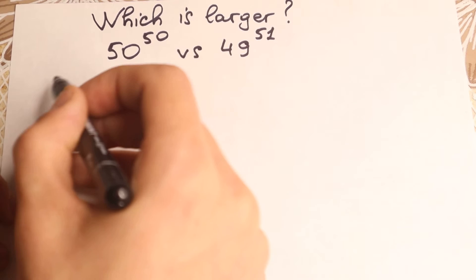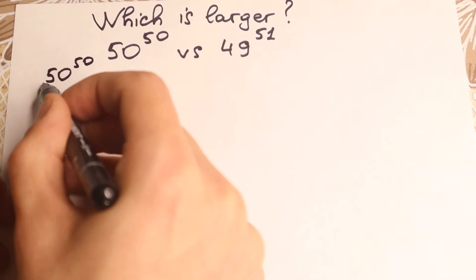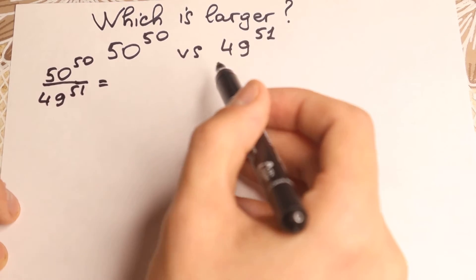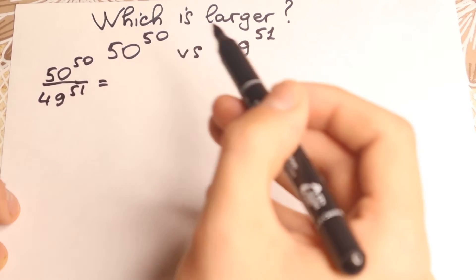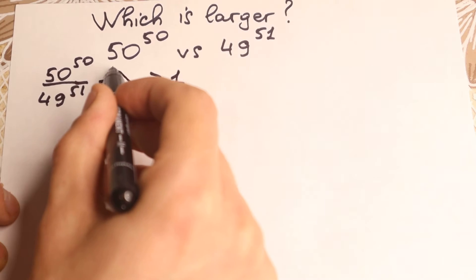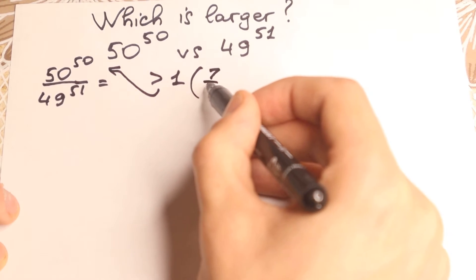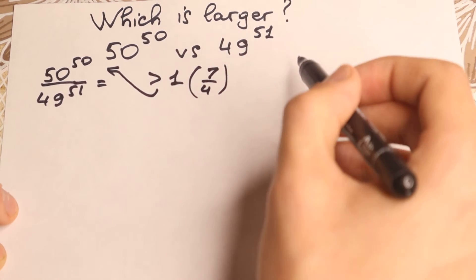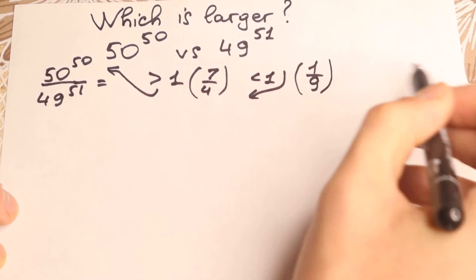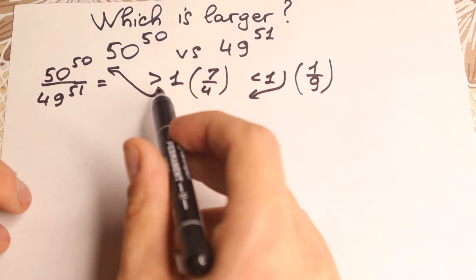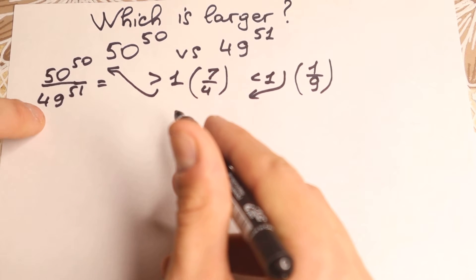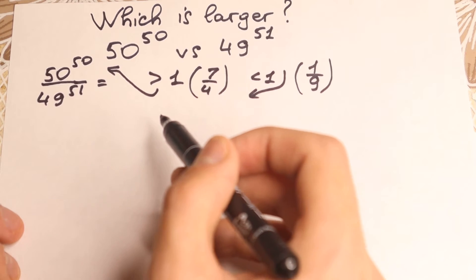First of all, let's try to divide the left hand side by the right hand side: 50 to the power of 50 over 49 to the power of 51. If we divide, we will get a fraction as our answer. This answer tells us a really interesting property: if the answer is greater than 1, then our numerator is greater — for example, 7 over 4. Or if our answer is less than 1, our denominator is greater — for example, 1 over 9. So if we divide and the answer is greater than 1, the left hand side is larger; if the answer is less than 1, the right hand side is greater.